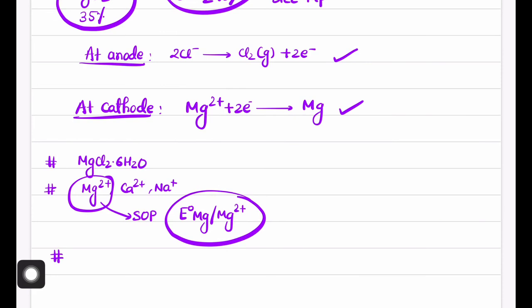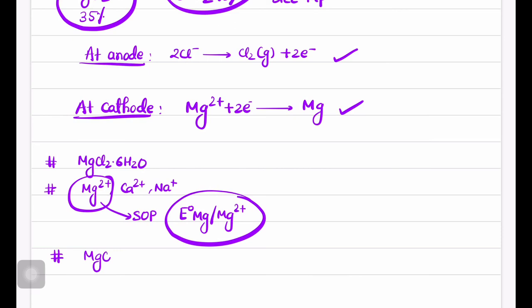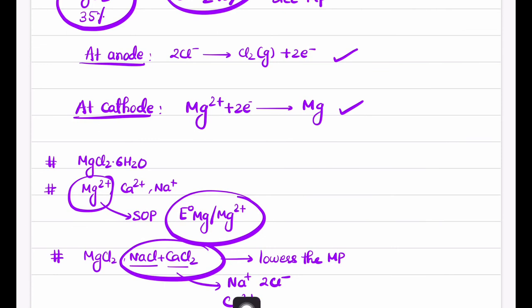They can ask you: what is the purpose of having a molten mixture of MgCl2, NaCl, and CaCl2? This lowers the melting point and provides ions like Na+, Cl-, and Ca2+, which increase the conductivity of the molten mixture. That's all about the Dow's process of extraction of magnesium from sea water.